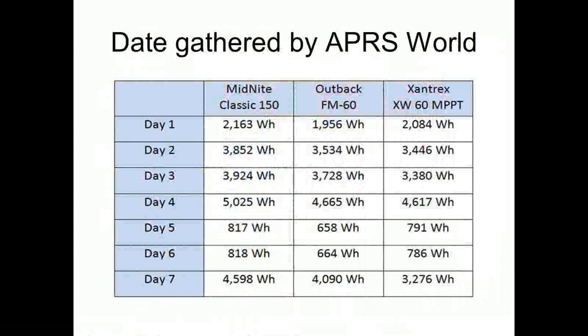This is actual data done at Ryan's house using three identical arrays, showing a comparison. This was done by APRS World — we had it done by a third party, so it was impartial and accurate. And it shocked us. The results show that on every single day of the week — and this is just an average week — the Classic outperforms the FM60 and the Xantrex 60 amp heartily every single day.